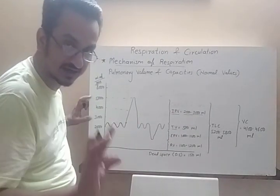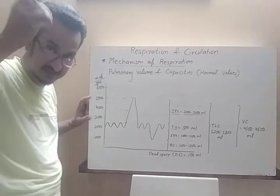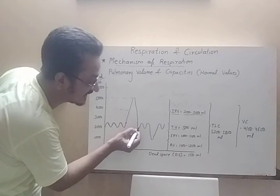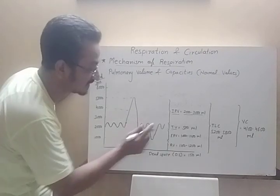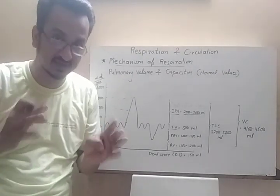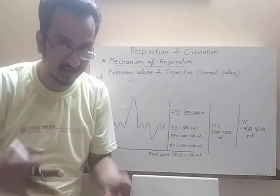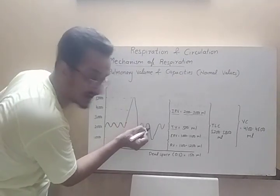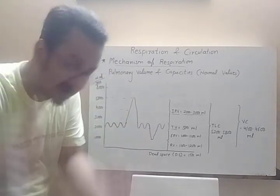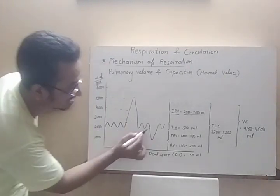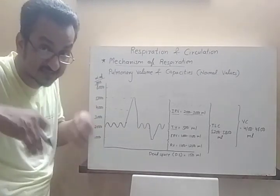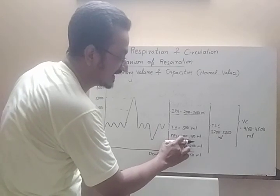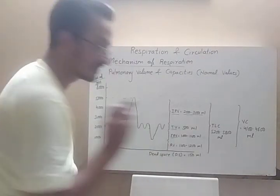Similarly, after a normal exhalation, if we forcefully expire, we can push out an additional 1000 ml of gas. This extra gas that can be expelled by forceful expiration is called expiratory reserve volume, or ERV. According to the textbook, the normal reading for ERV is 1000 to 1100 ml.